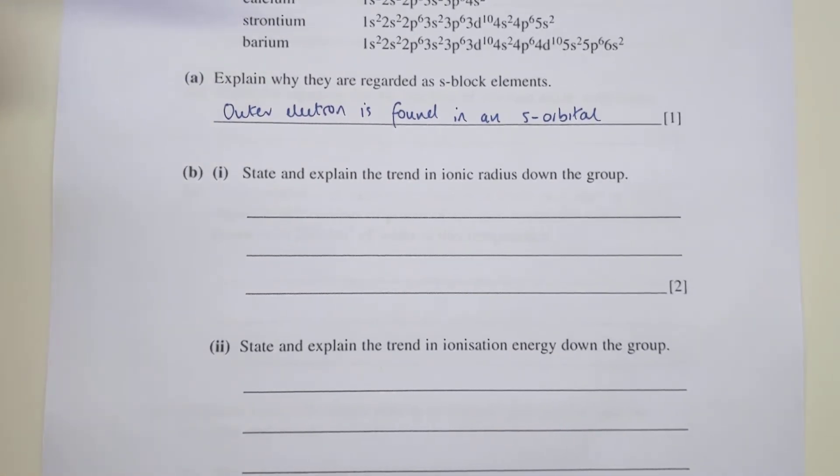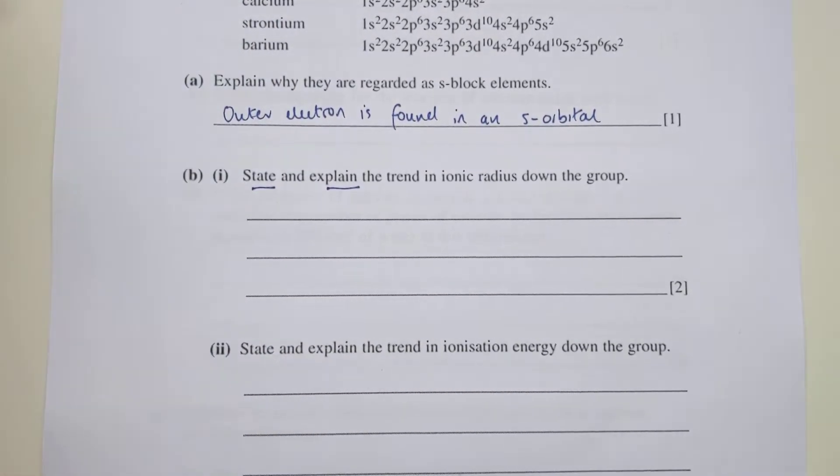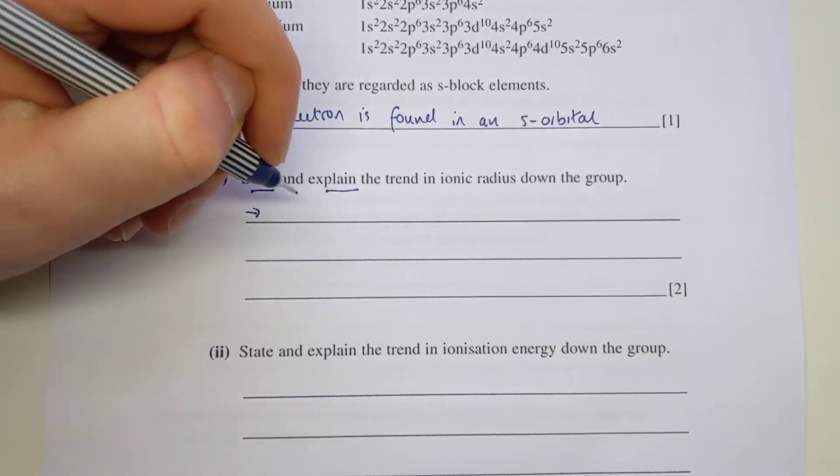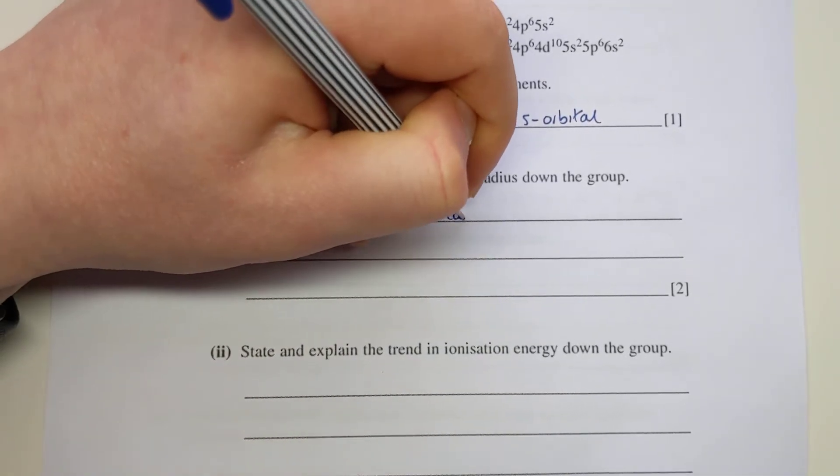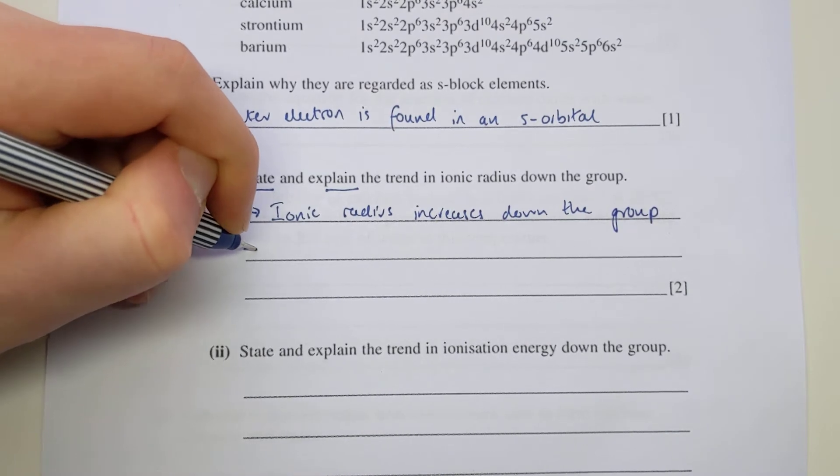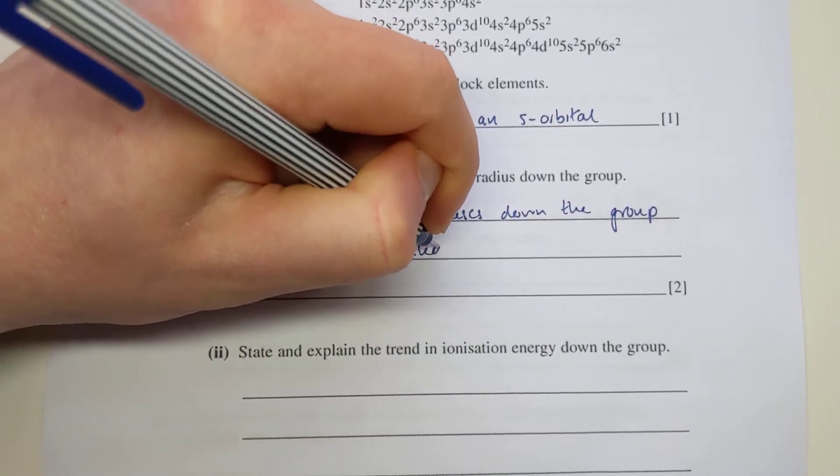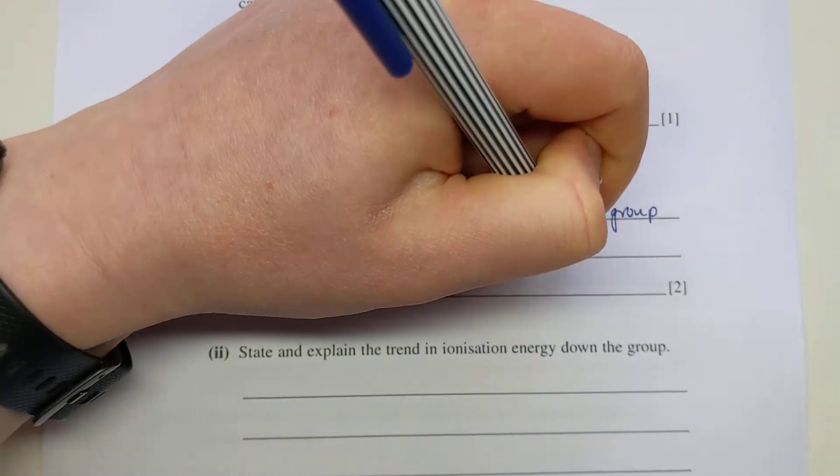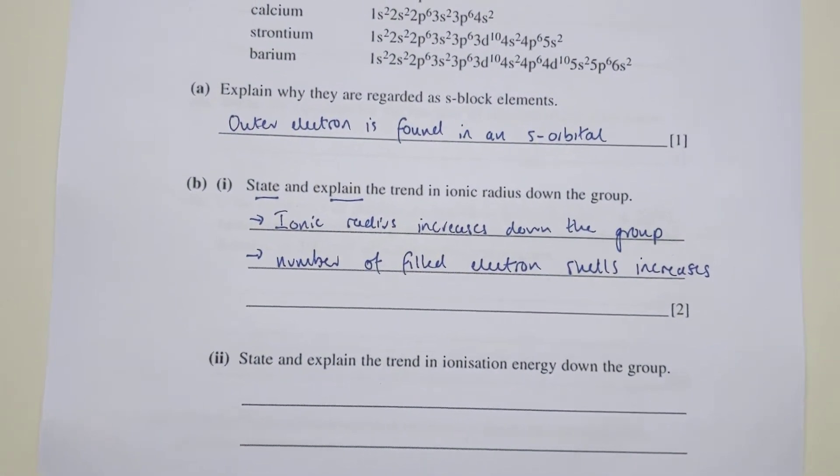Second one: state and explain the trend in ionic radius down the group. Two parts for two marks - state first and then explain. The statement's pretty simple: the ionic radius increases down the group. The explanation is you've got an increased number of filled electron shells as you go down each part of that group.